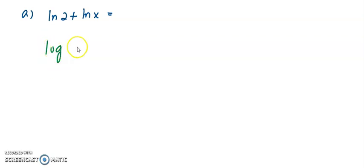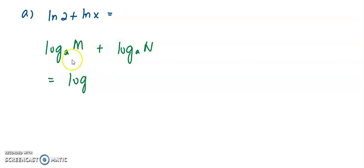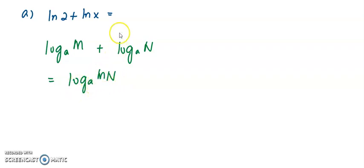Before that, you must know the laws of log. If I have two terms of log both having the same base A, these two terms can be combined depending on the operation. If the operation is addition, we check whether both log terms have the same base. If they do, we can combine them, and the two terms become log of m times n, base A.